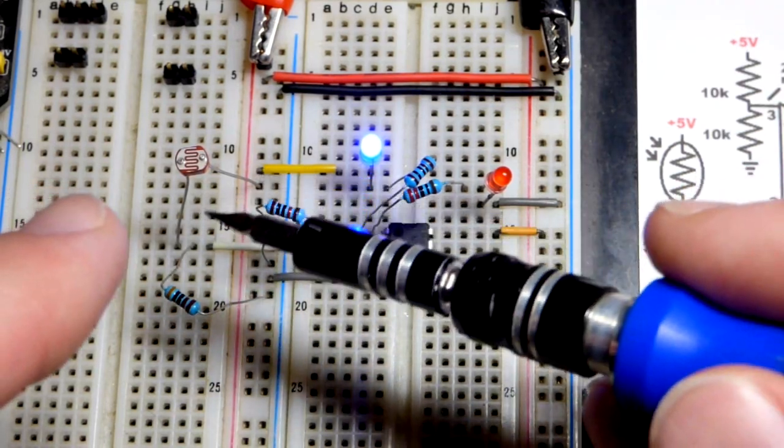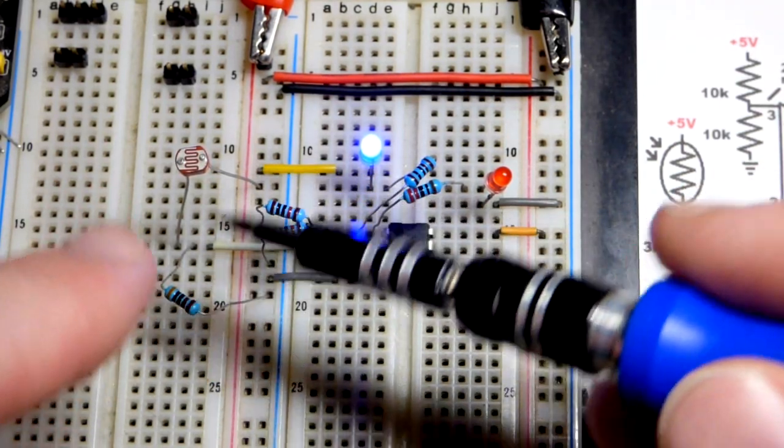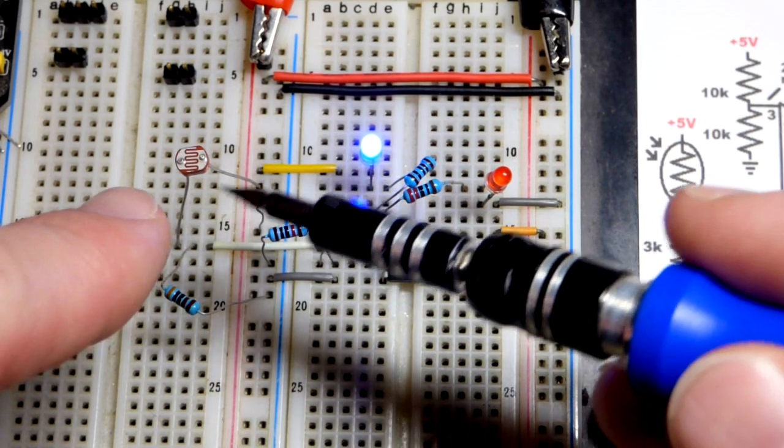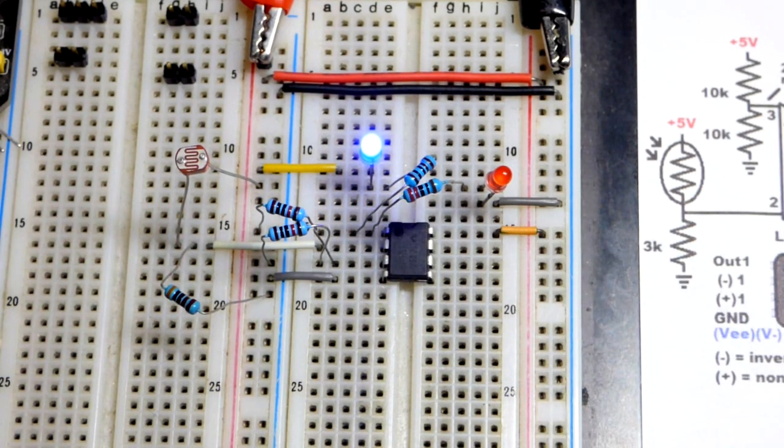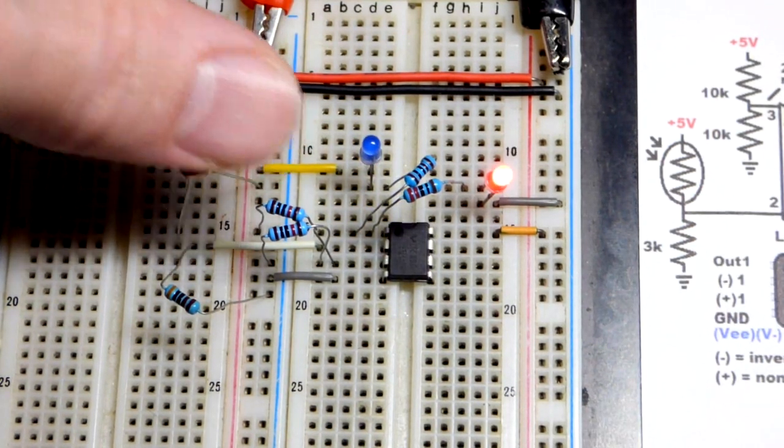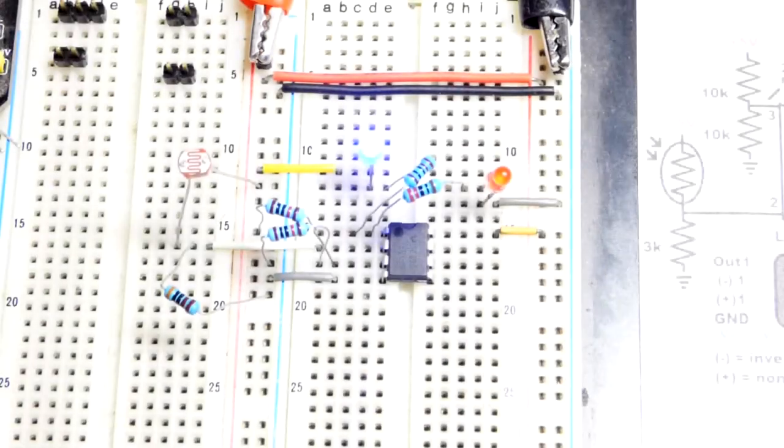it raises the voltage because there's less resistance—that's 3000 ohms, less resistance on the high side. The voltage goes above 2.5 volts and the blue LED lights up. I can dim it with my finger or turn the lamp off.